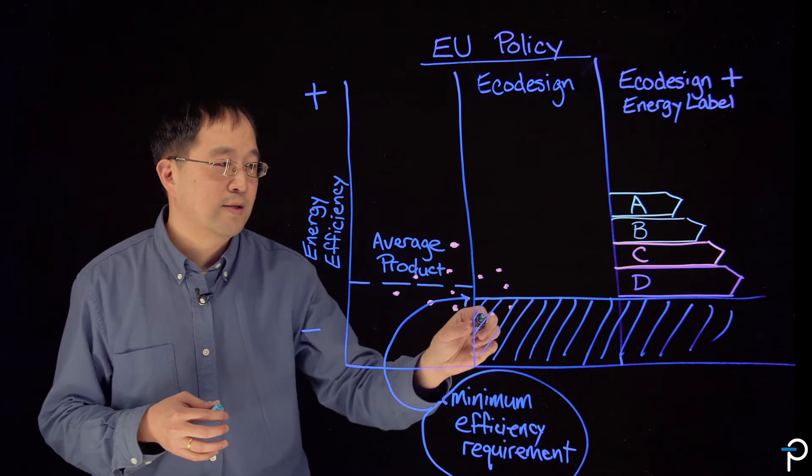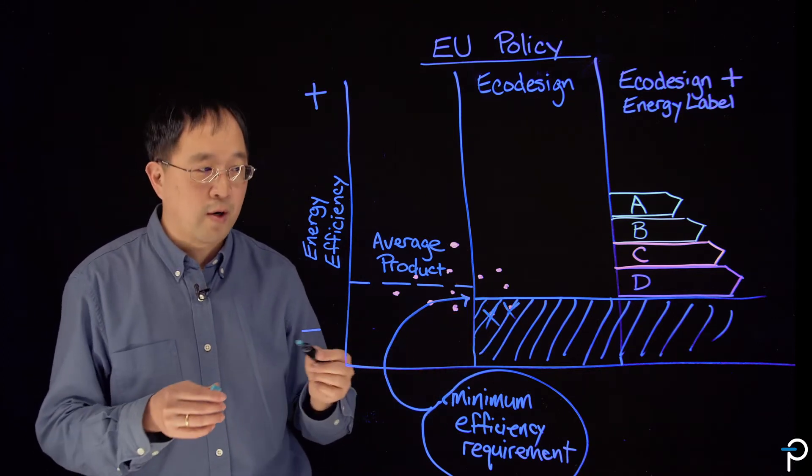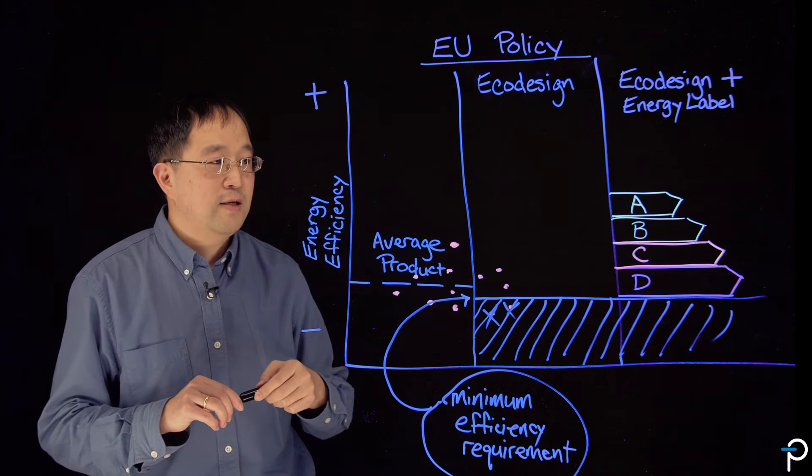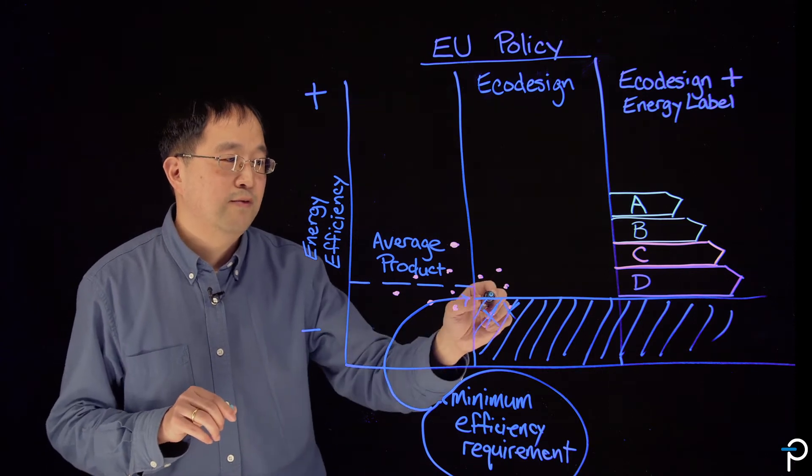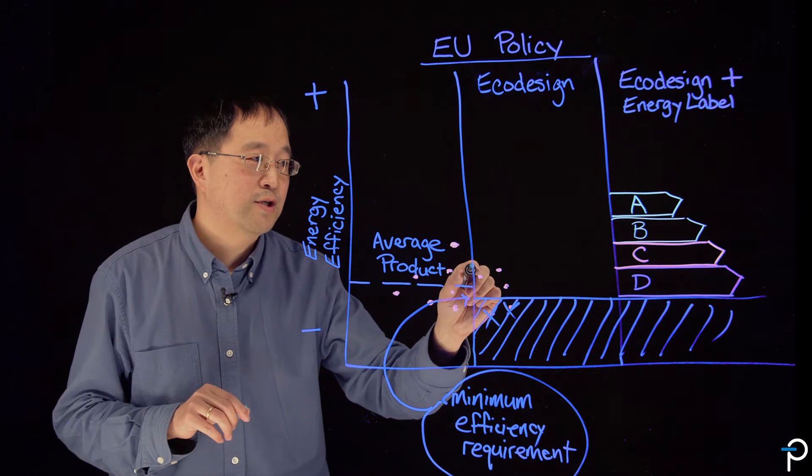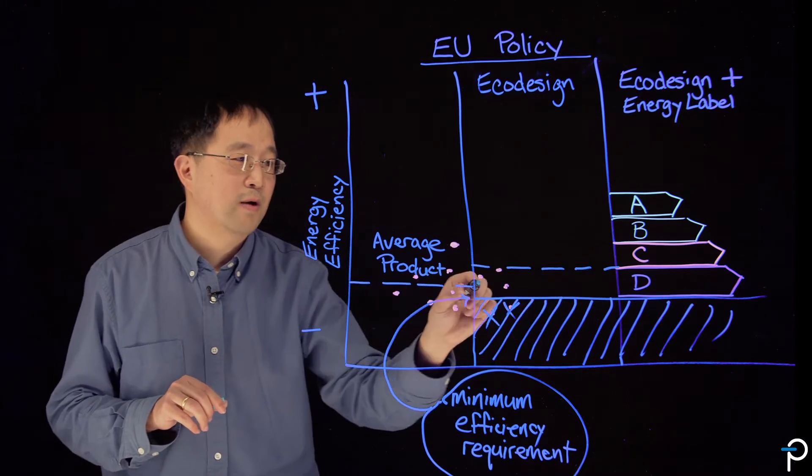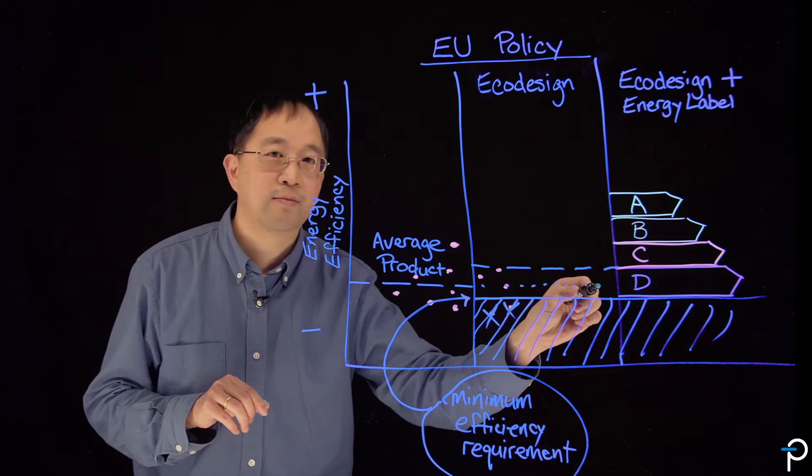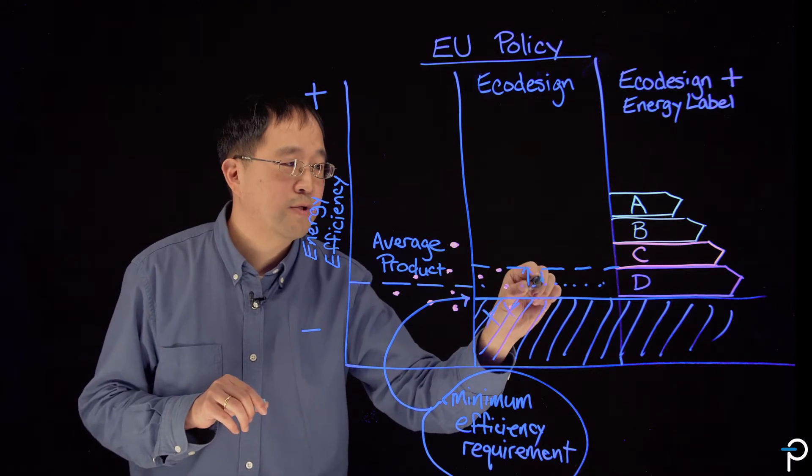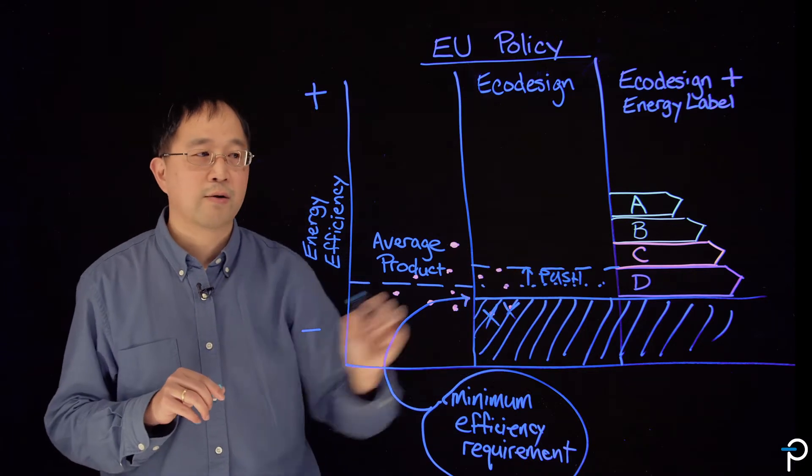So you can see that instantly there are products here that would no longer be part of the marketplace. And the idea here is once you've removed all of these poor performing products, you can essentially move up the average product from here, where it used to be, pushed up to this new higher level.